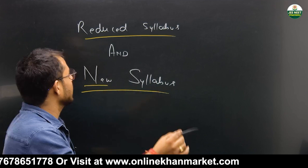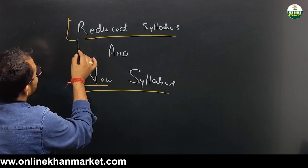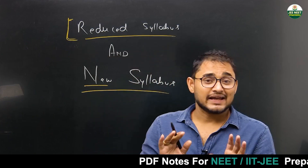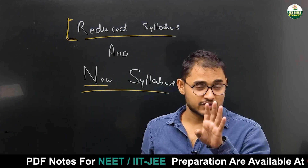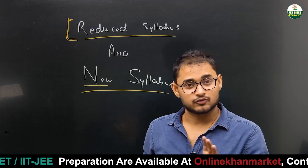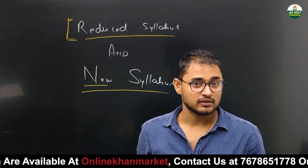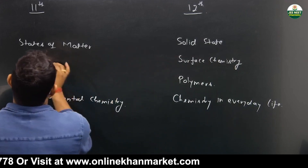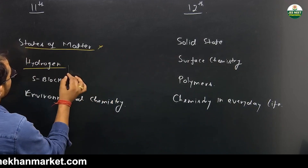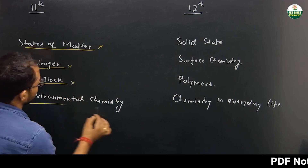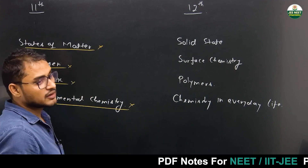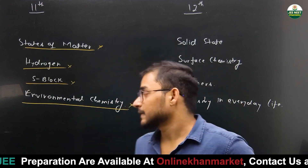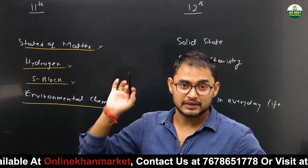First of all, let's look at the syllabus which is reduced. Actually, a total of 8 chapters has been reduced — 4 chapters from the 11th portion and 4 chapters from the 12th portion of chemistry. The 4 chapters from 11th class that have been completely removed are: States of Matter, Hydrogen, S-block, and Environmental Chemistry.